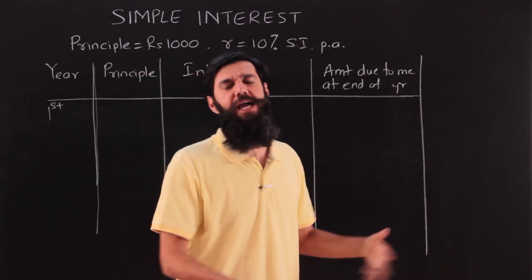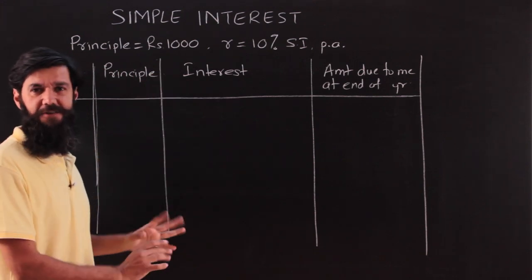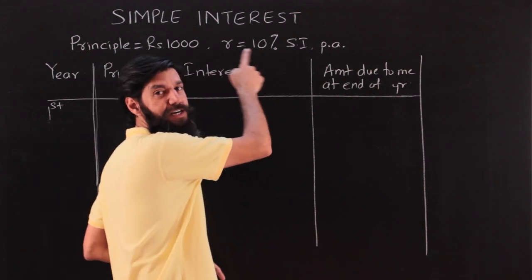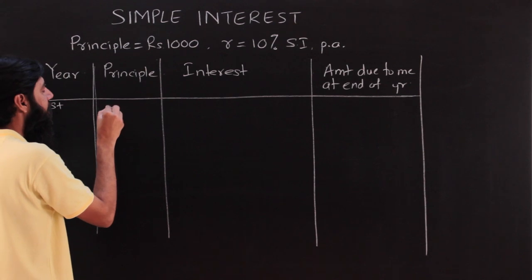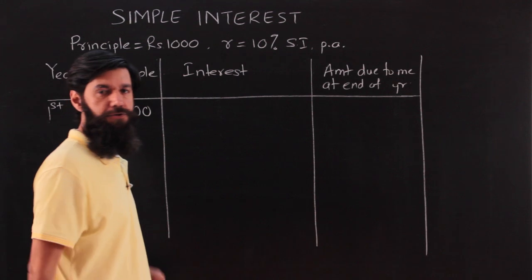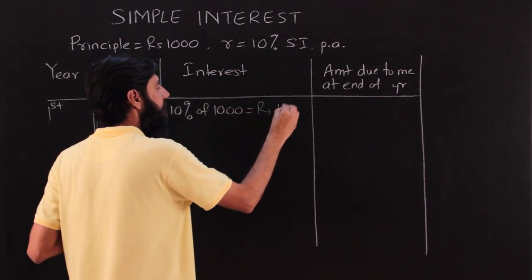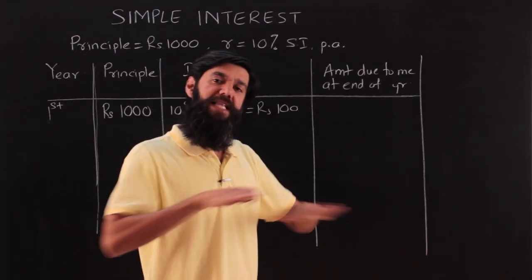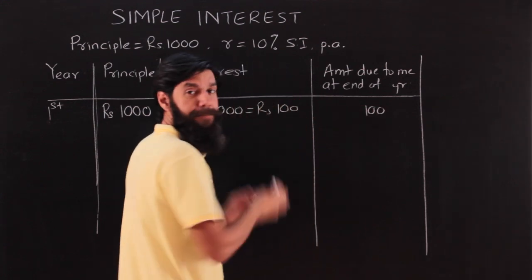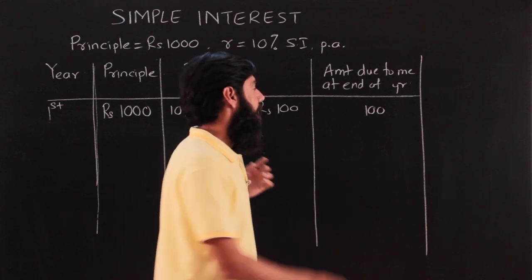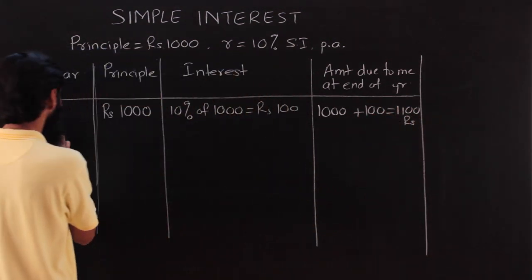Let us learn simple interest through actual calculations. Say I keep a principal amount of rupees 1000 in the bank, and the bank and I agree on a rate of 10 percent simple interest per annum. In the first year, the principal is 1000, the interest is 10 percent of 1000, which is rupees 100. The amount due to me at the end of the year is 1000 plus 100, that is rupees 1100.